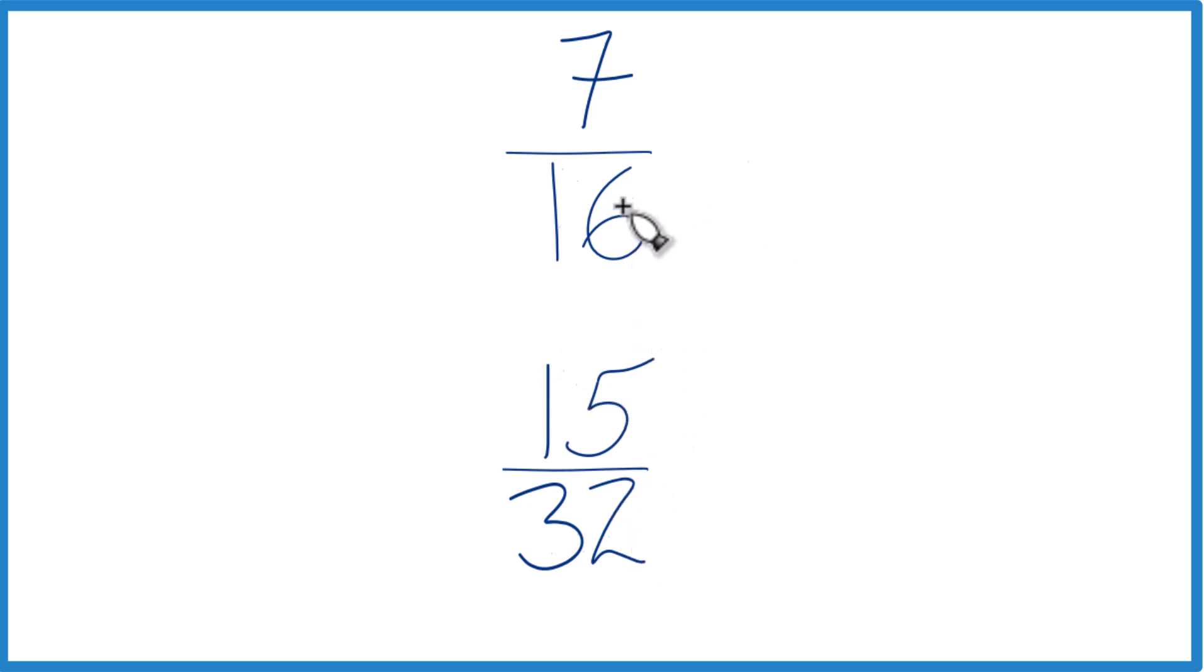The other way is to find a common denominator. Right now we have 16 and 32. But if we had the same denominator, we could just compare the numerators and we'd be done.